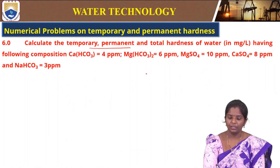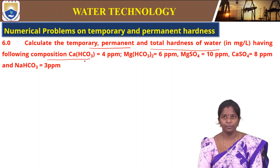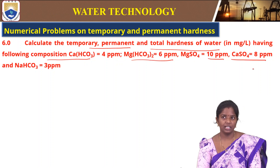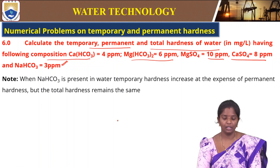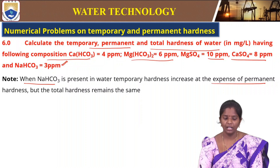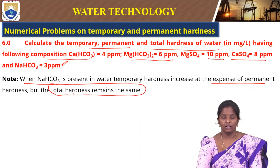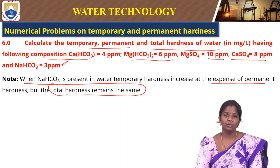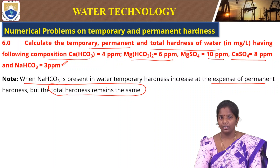Calculate temporary, permanent, and total hardness of a water sample with: calcium bicarbonate 4 ppm, magnesium bicarbonate 6 ppm, magnesium sulfate 10 ppm, calcium sulfate 8 ppm, and sodium bicarbonate 3 ppm. Whenever sodium bicarbonate is present in water, temporary hardness increases at the expense of permanent hardness, but total hardness remains the same. Permanent hardness can be calculated from: permanent hardness = total hardness − temporary hardness.